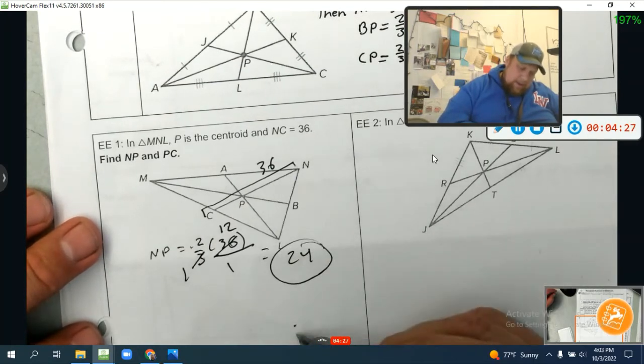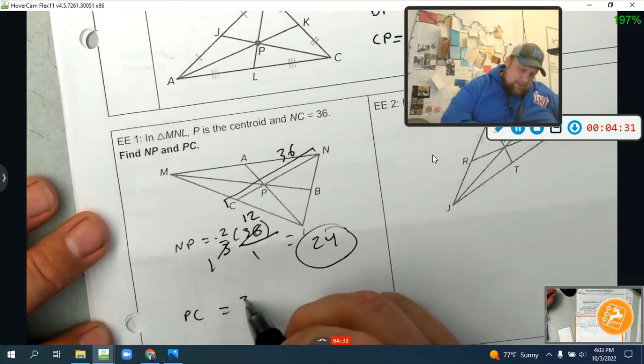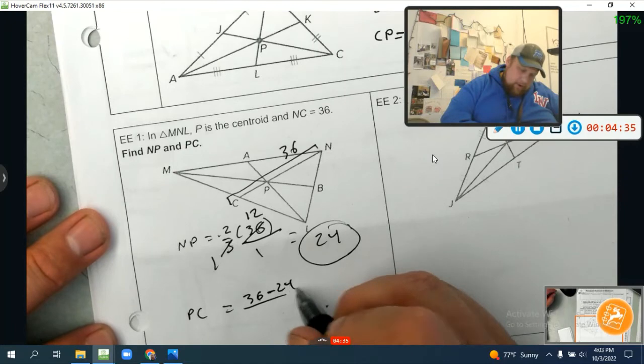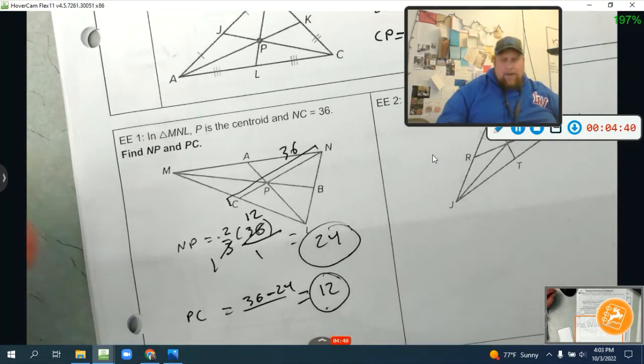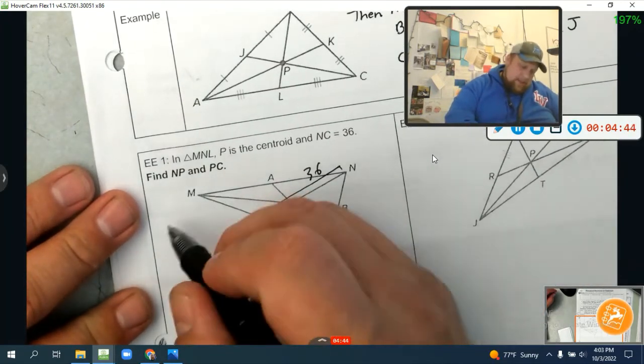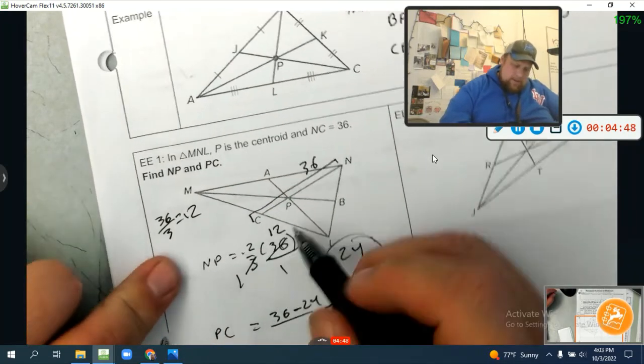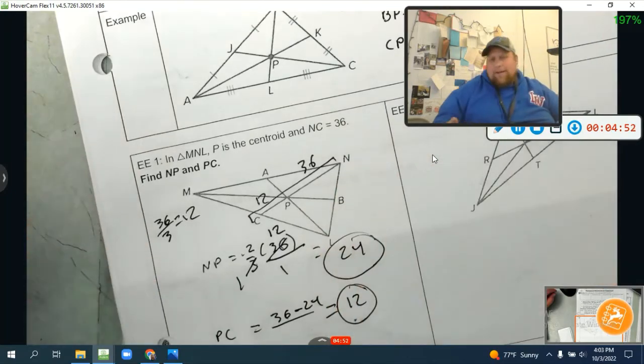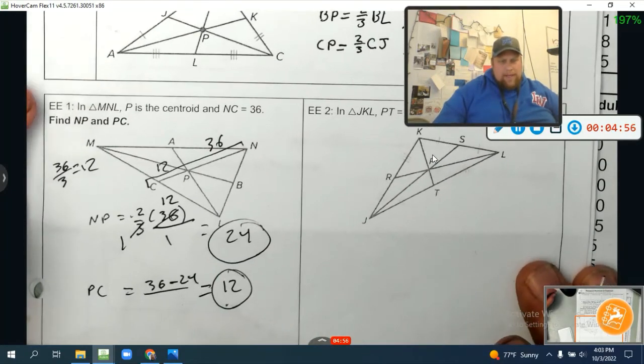And if two times 12 is 24, then that means that PC is just equal to 36 minus 24, which equals what? 12. Now guys, how I would personally do it most of the time, I just say if the whole thing is 36, I just say 36 divided by three equals 12. So that means PC is 12 because it's one-third, and then this is the remaining 24. That's kind of how I do it. You'll see it over here.